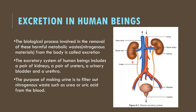The excretion system includes a pair of kidneys, a pair of ureters, a urethra, and a urinary bladder. Kidneys are located on either side of the backbone in the abdomen. Their function is to produce urine to filter out waste products from the blood. Just like the lungs use alveoli to filter out carbon dioxide, kidneys use a functional unit called a nephron to do this.